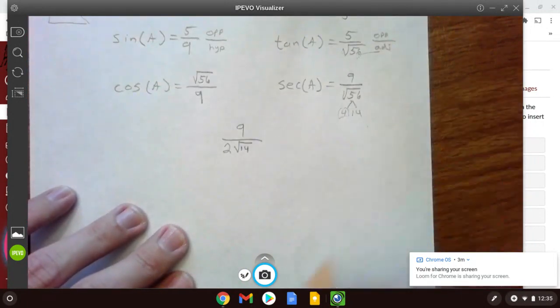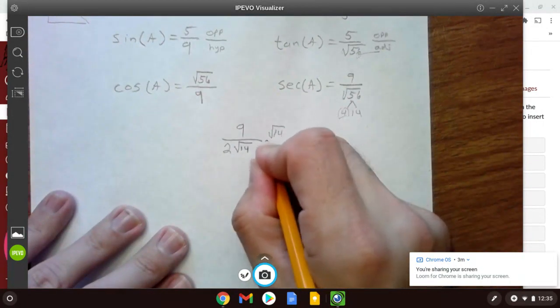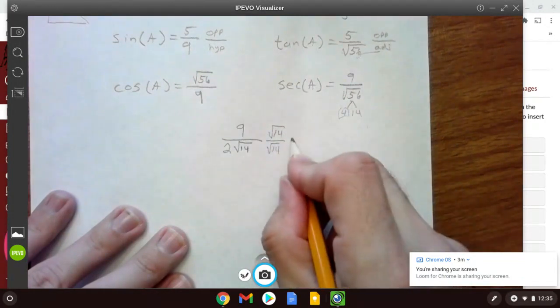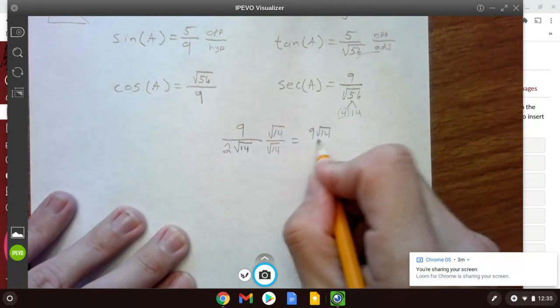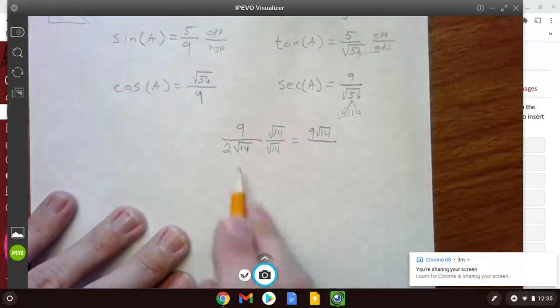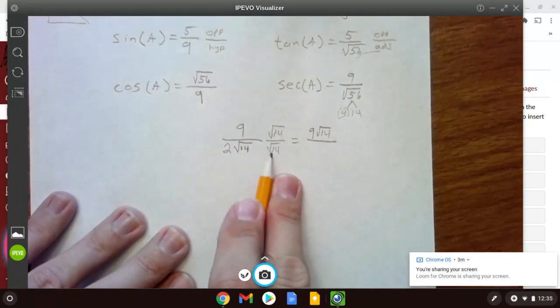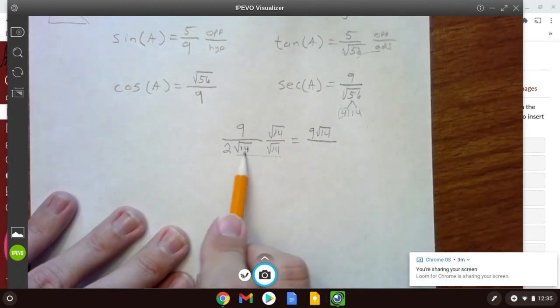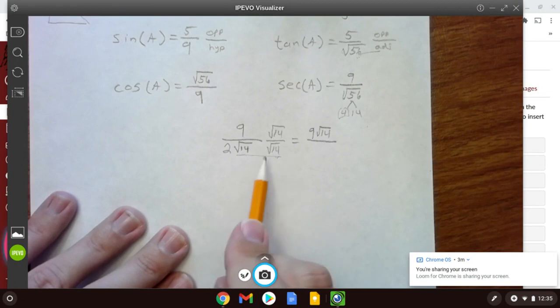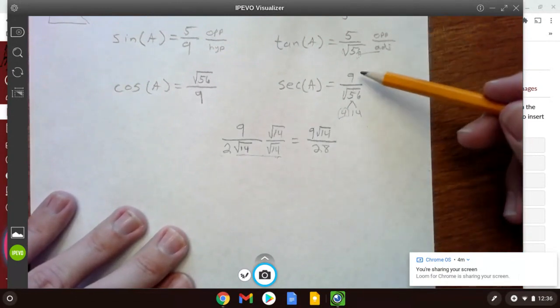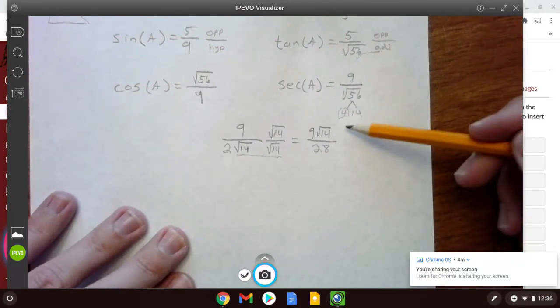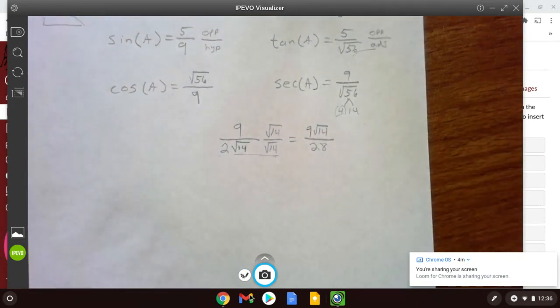That's going to give us a 9 root 14 on top. And then on the bottom, root 14 and root 14 makes 28. And then 28, I'm sorry, root 14 and root 14 makes 14, and then 14 times 2 is 28. All right, so I just took that secant answer there, and I rewrote it so that there's no radical in the bottom.